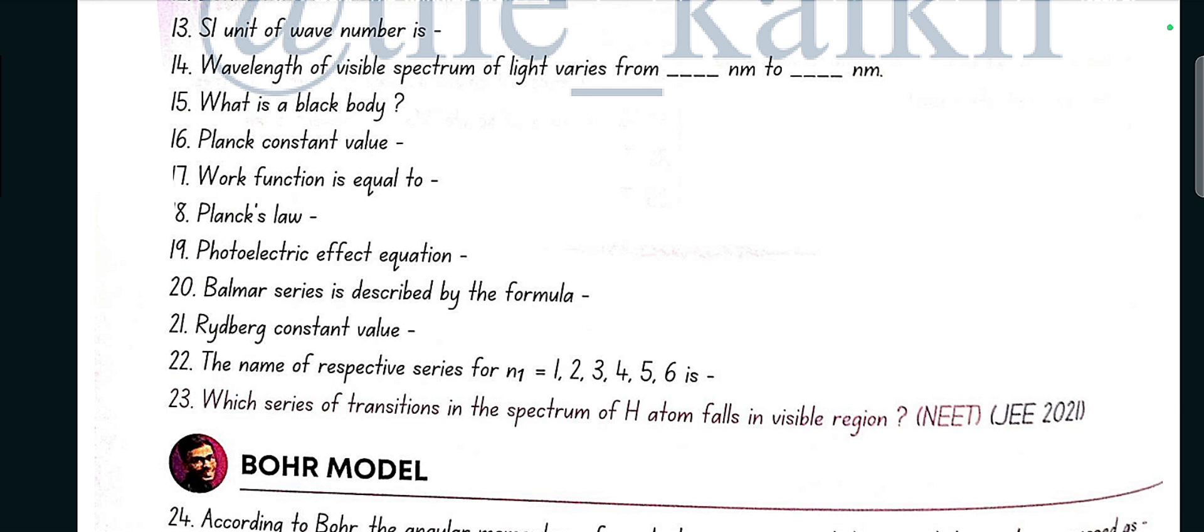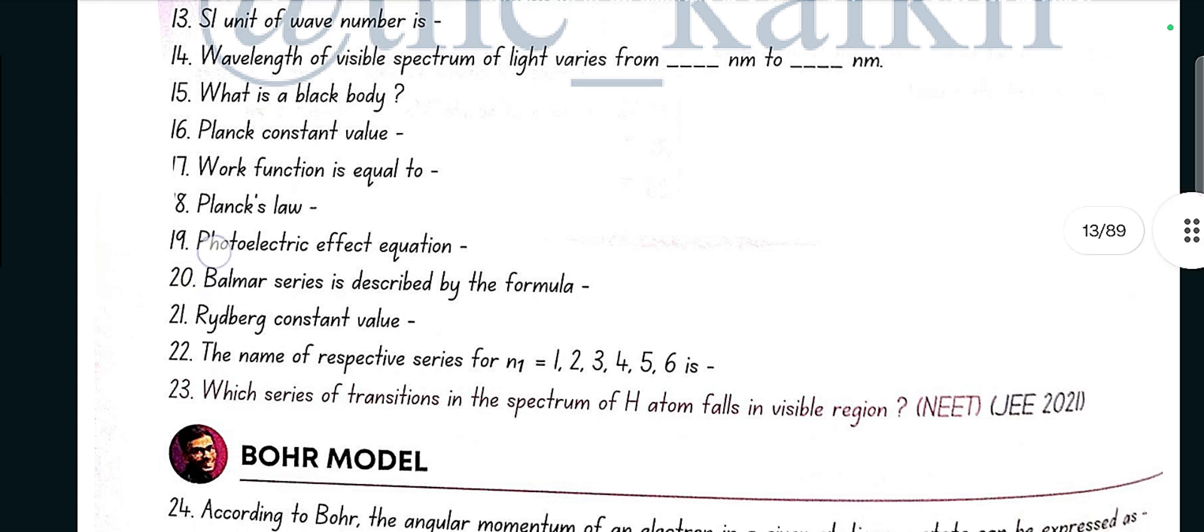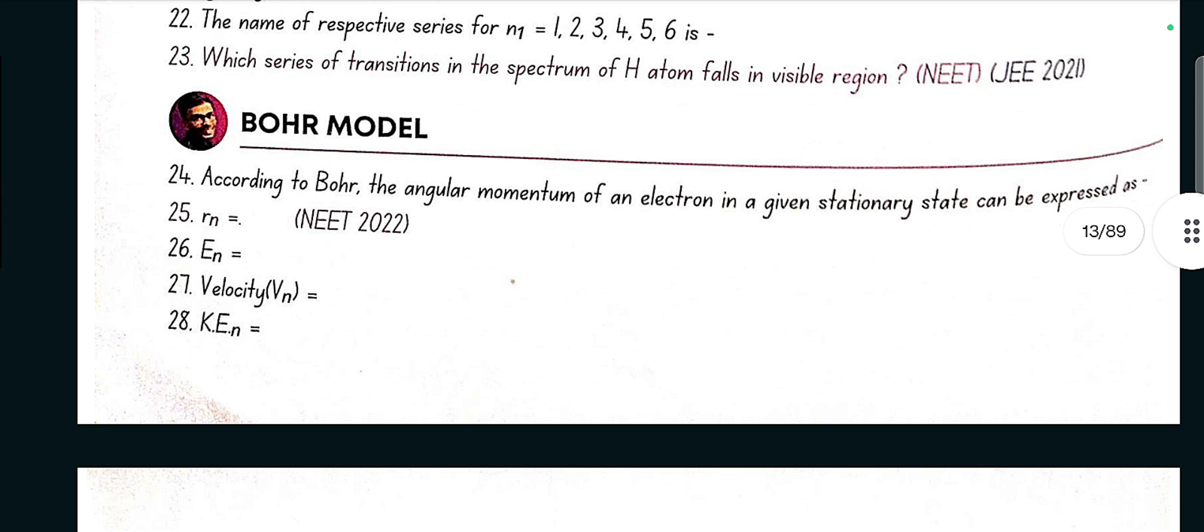The name of respective series for n1 equal to 1, 2, 3, 4, 5, 6 is: for one it is Lyman, for two it is Balmer, for three it is Paschen, for four it is Brackett, for five it is Pfund, for six it is Humphrey. Which series of transitions in the spectrum of hydrogen atom falls in the visible region? Balmer series.